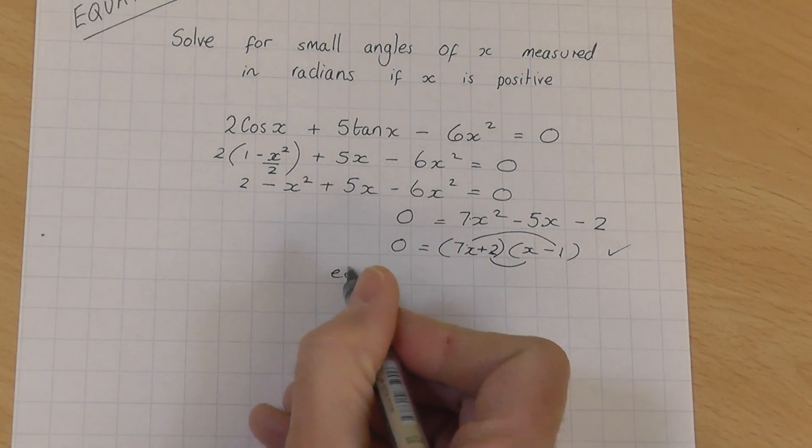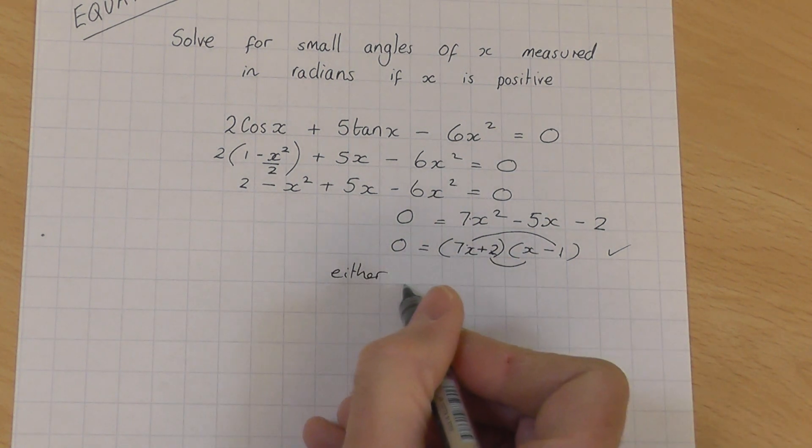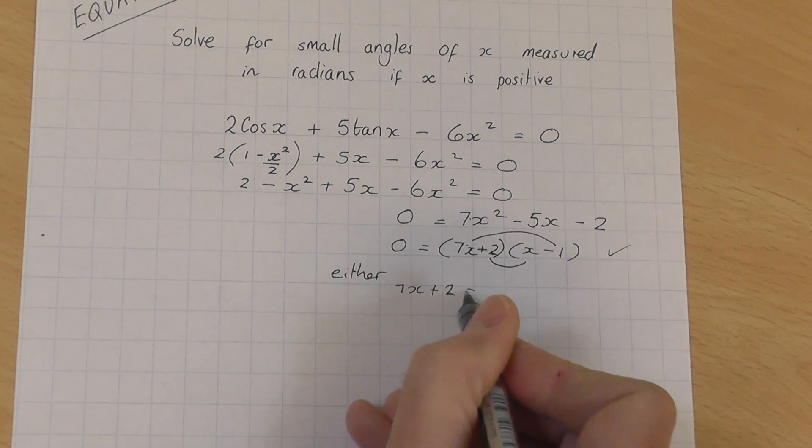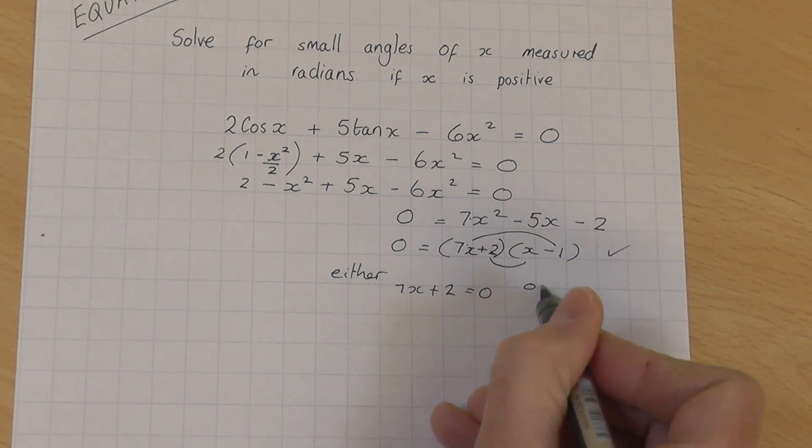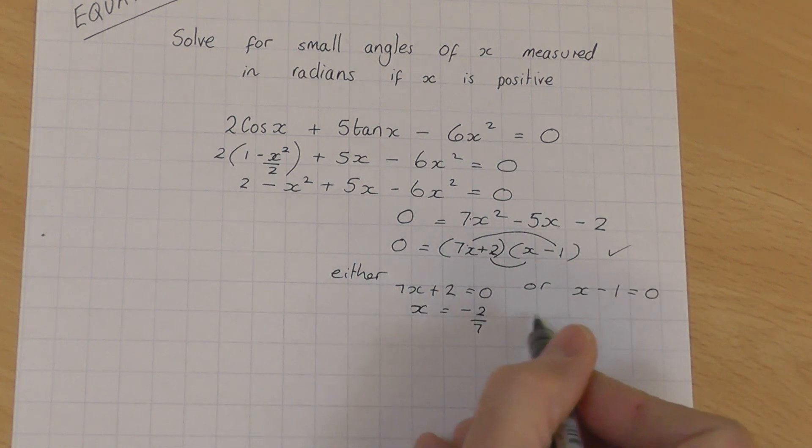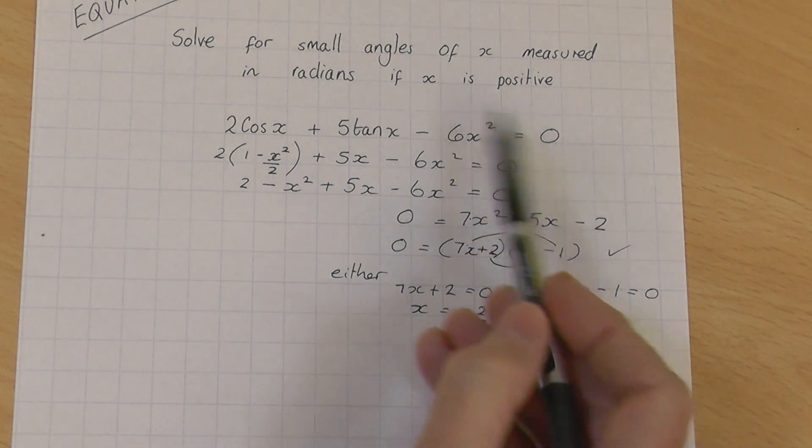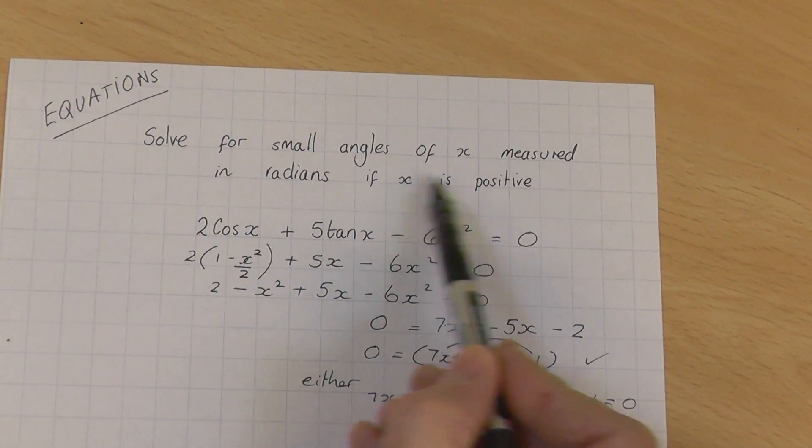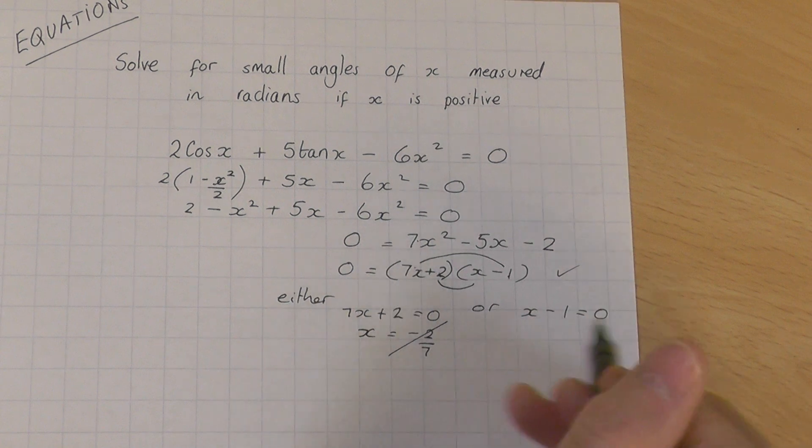So therefore we can now say either the first bracket, 7x plus 2 equals 0, or the second bracket, x minus 1 equals 0. This one here is going to give you the negative answer minus 2 over 7. We're going to ignore that because we want, remember it says up here x is positive, so that's no good.